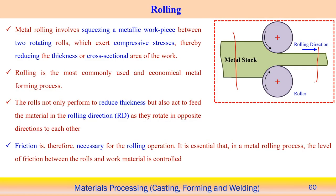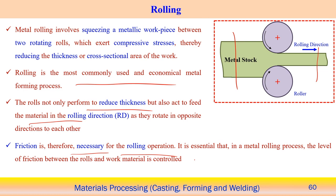Here you can see the cross-section area before rolling and after rolling operation, showing the reduction in cross-section area. This reduction of the thickness is possible using the rolling operation. It is a most commonly used and most economical process. The rolls not only reduce the thickness but also act to feed the material in the rolling direction. Friction is a main mechanism and is essential; the level of friction between the rolls and the workpiece has to be controlled.